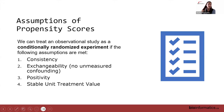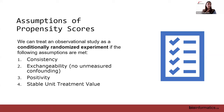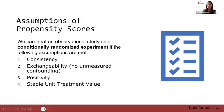The second assumption is exchangeability — equivalently, no unmeasured confounding. Any possible confounder making individuals more or less likely to receive treatment that also impacts the outcome must be measured and included in the propensity score model. Exchangeability specifically means: if we swapped the groups after accounting for propensity scores — assigning treatment to controls and control to treated — we would get the exact same conclusions. This should hold if all confounding is accounted for.